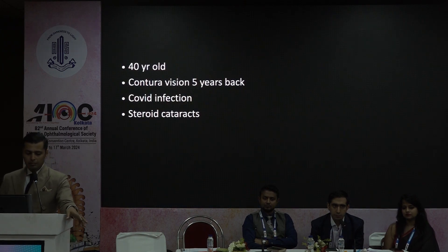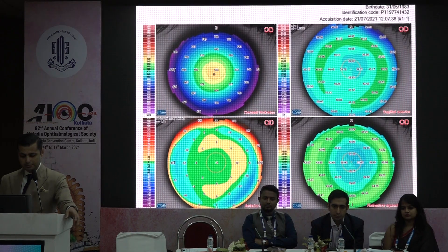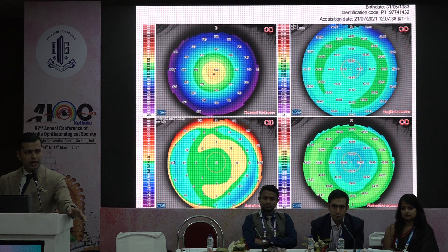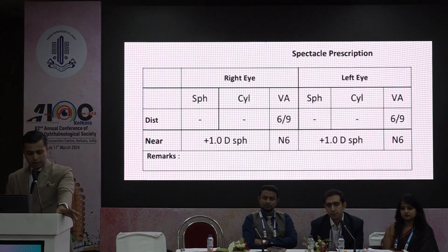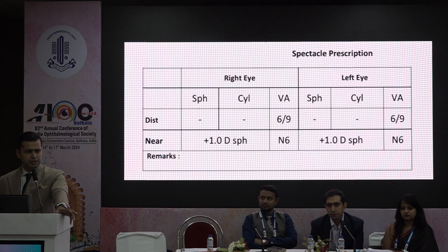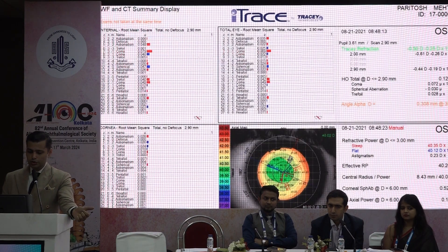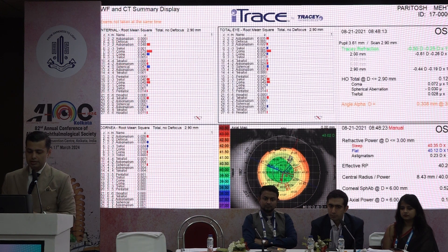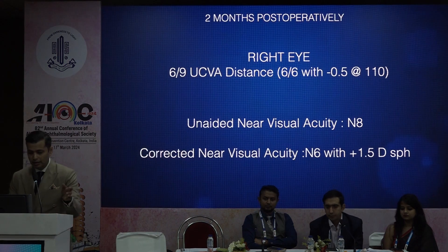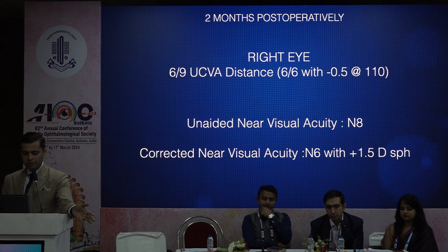Case 3: a 40-year-old who underwent LASIK, then contracted COVID and developed a steroid cataract five years later. Post-LASIK topography showed a clean, pristine cornea — particularly with modern topo-guided LASIK. We implanted the Vivity toric EDOF lens. Post-operatively at two months, unaided distance vision was 6/9 — don't push these patients to 6/6 initially — and near vision was N8, improving to N6 with a +1.5 add. Post-op aberrometry showed minimal residual refraction of -0.5 with 0.25.